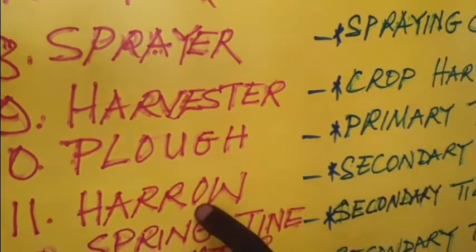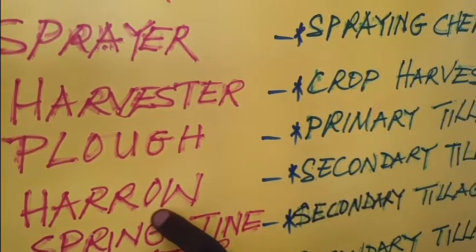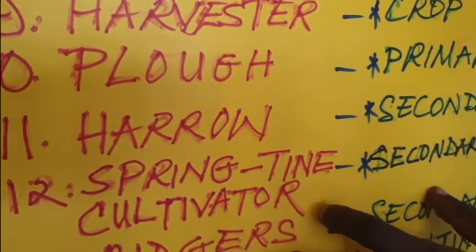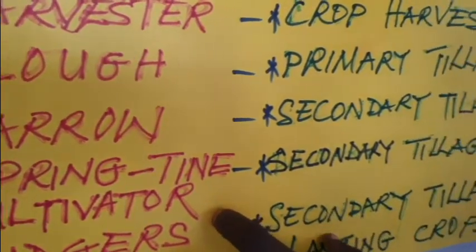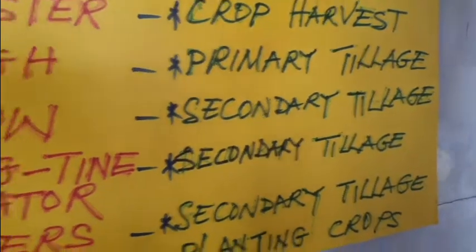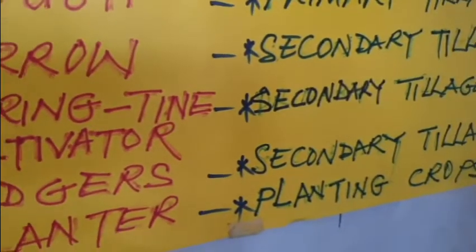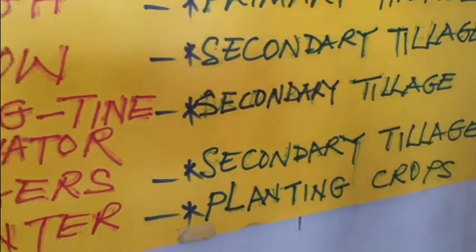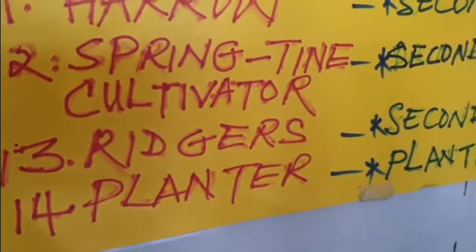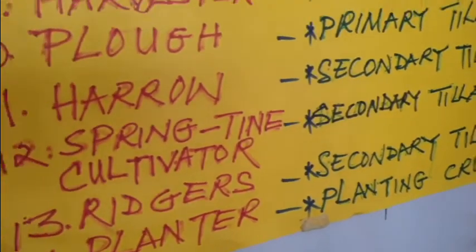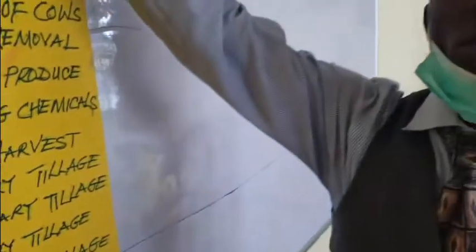Number eleven is the harrow. The harrow is a secondary tillage implement; it is used after the disc plow has been used. The spring-tine cultivator is also a secondary tillage implement for cultivating the land. You have the ridger, which is an implement used for ridge construction on the farm. Then the planter is used for planting of crops.